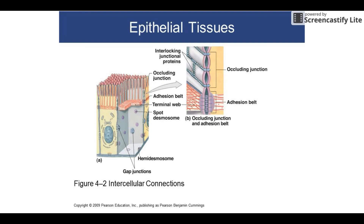Macula adherens are found anywhere there's a lot of pulling and twisting on cells, like in your skin. When someone twists your arm, the cells don't shred apart because these junctions hold them together. In this picture you can see a gap junction as a communicating tunnel, an adhesion belt like superglue, and a watertight seal. Your skin has examples of all three types of junctions.